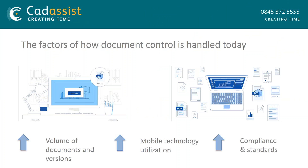There are three factors in play that are changing how document control is handled in today's construction projects. The first is overwhelming pressure to produce volumes of documents, manage versions and release accurate information to the field. This has added complexity with the adoption of BIM and the requirement for sharing model-based design. Second, mobile technologies increase demand for instant access to the latest information, with versioning happening in real time. The third is compliance and legal requirements for a single data repository for entire projects. The document control manager is no longer a one-person job — document control is now democratized and requires a collaborative effort.